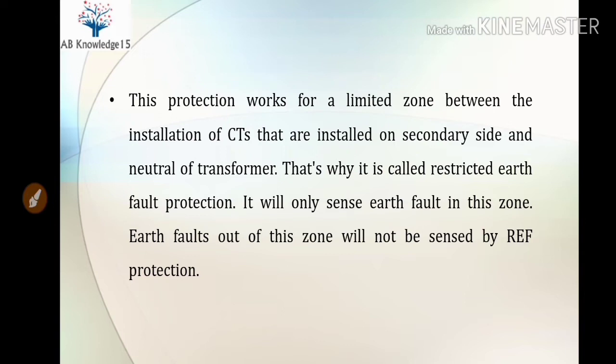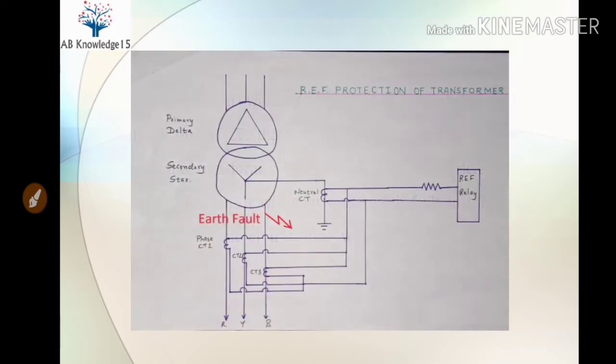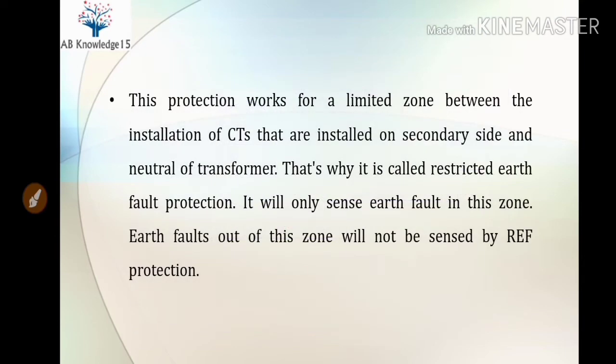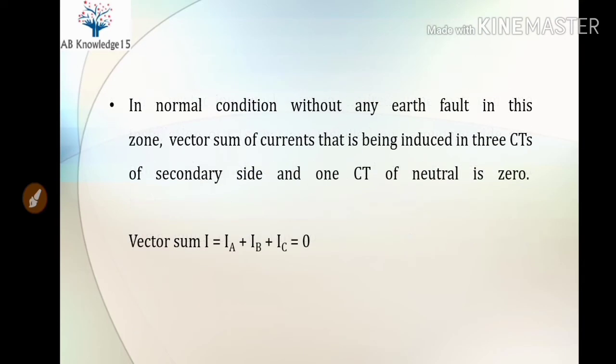That's why it is called Restricted Earth Fault protection — it will only sense earth faults within this zone. Earth faults outside this zone will not be sensed by REF protection. This allows us to determine that the earth fault is only within this zone, helping us identify the location of the earth fault.